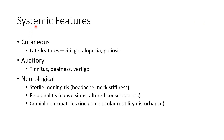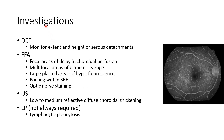Now let us discuss the systemic features of VKH disease. Cutaneous features are late features and include vitiligo, alopecia, and poliosis. Auditory features include tinnitus, deafness, and vertigo. Neurological features include sterile meningitis — that is headache and neck stiffness — features of encephalitis like convulsions and altered consciousness, and cranial neuropathies including ocular motility disturbance.